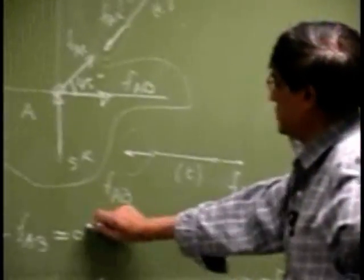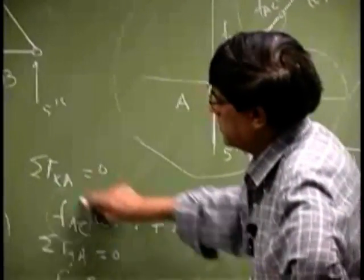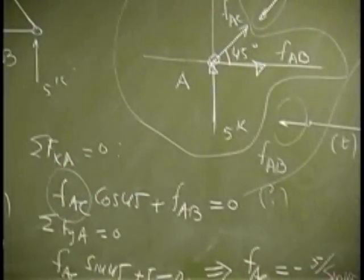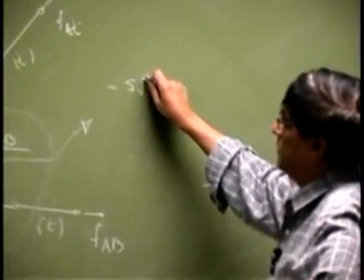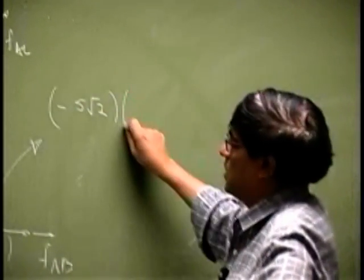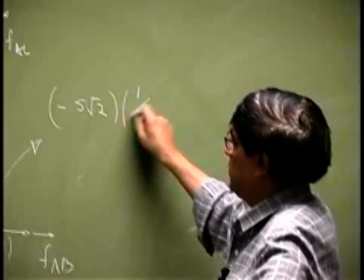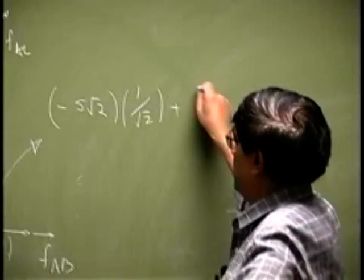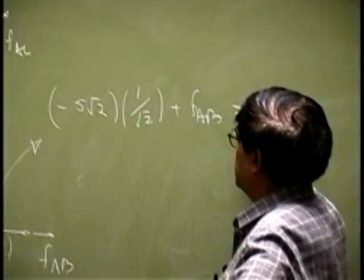Then we go to this equation. Now FAC will be negative 5 root 2. Then you have cosine which is 1 over root 2, plus FAB equals 0, plus FAB equals 0.